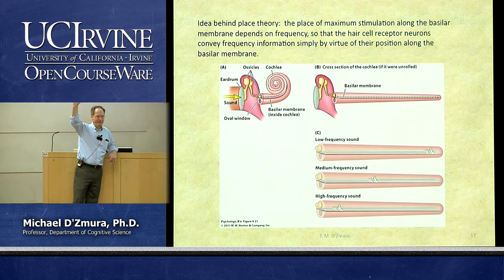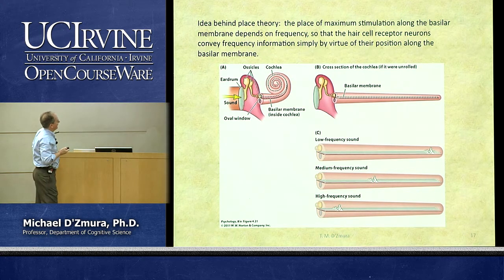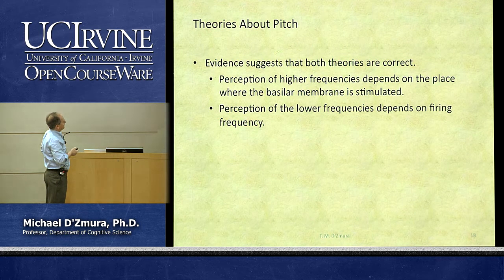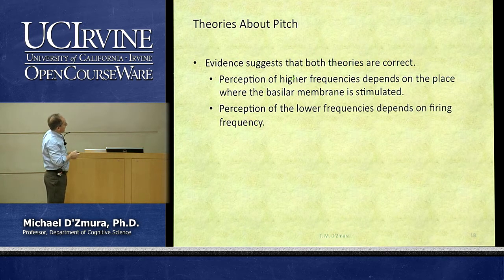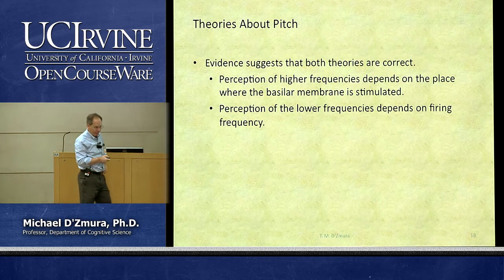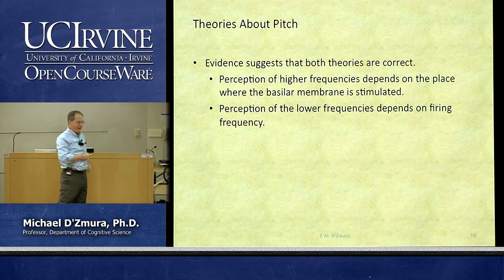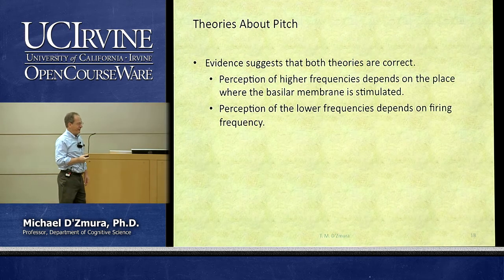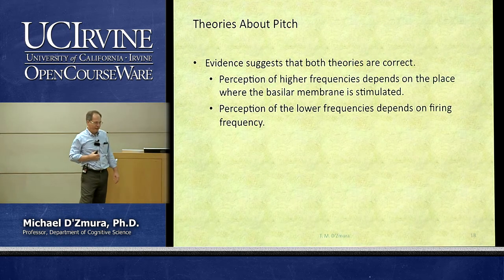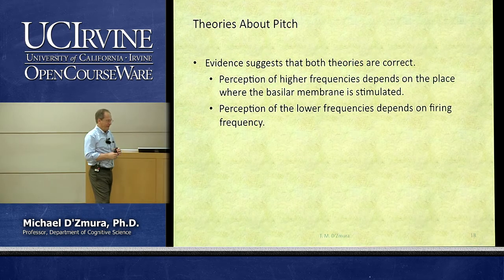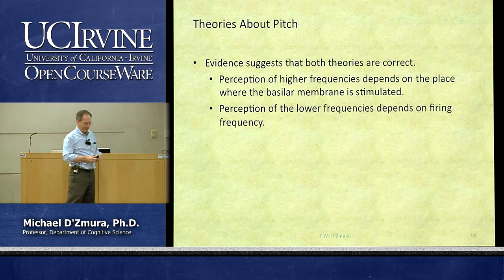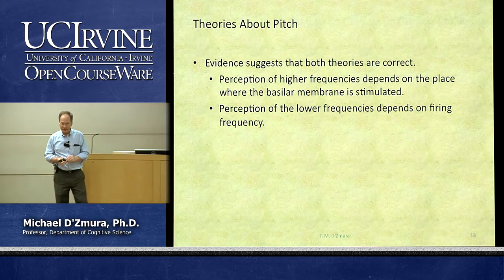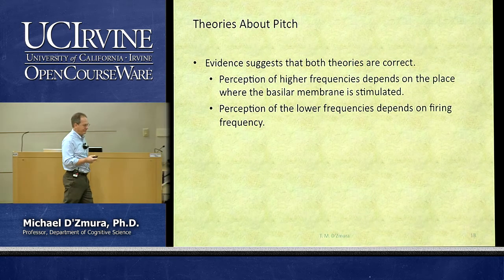In total, evidence suggests that both theories are correct. The perception of higher frequencies depends on the place where the basilar membrane is stimulated best — that's place theory. At lower frequencies, we can rely on the rate at which individual neurons are firing — the rate of action potentials — which is frequency theory. Effectively we have a hybrid theory: one kind of explanation for higher frequency stimuli and another for lower frequencies.